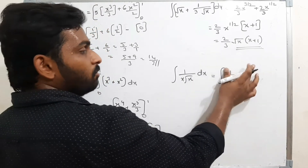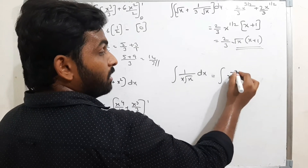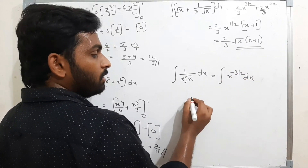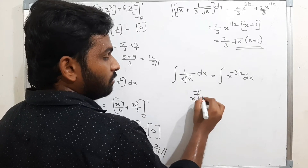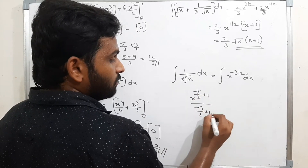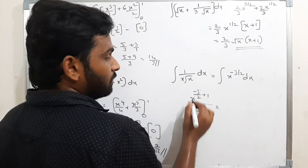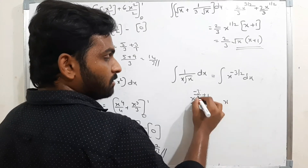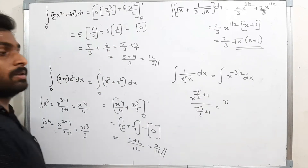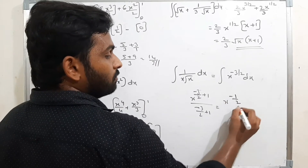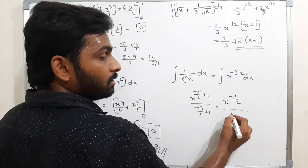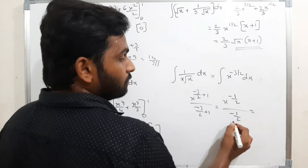Moving x^(3/2) to the numerator gives x^(-3/2). Using the formula: x^(-3/2 + 1) divided by (-3/2 + 1). That simplifies to x^(-1/2) divided by (-1/2).